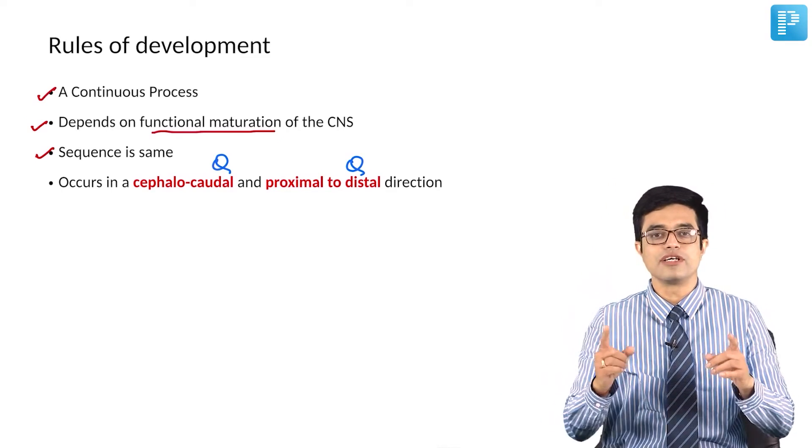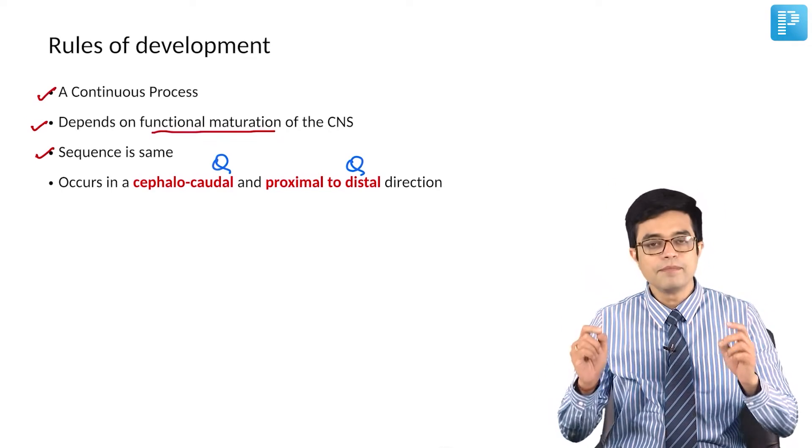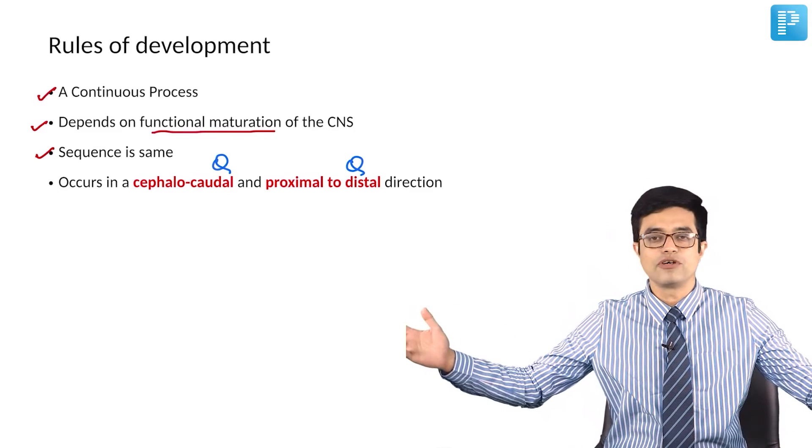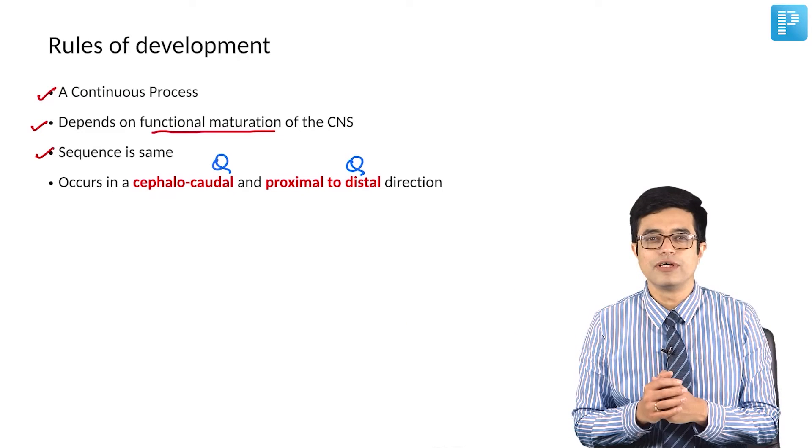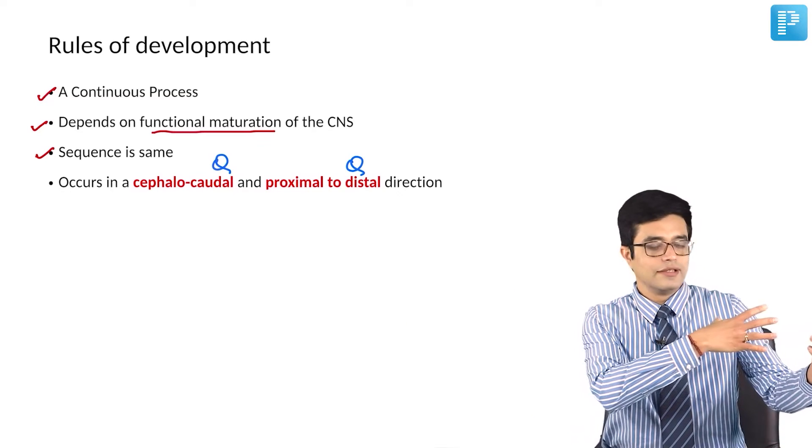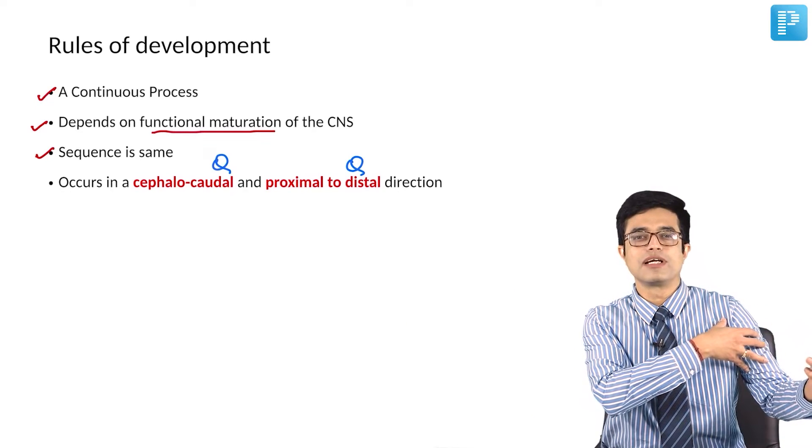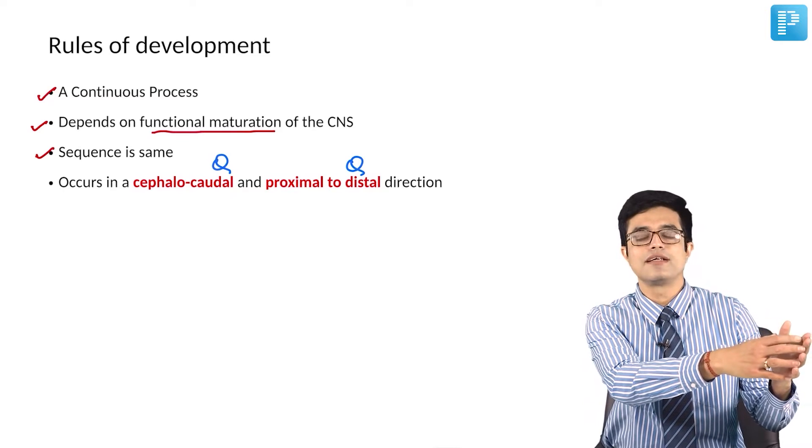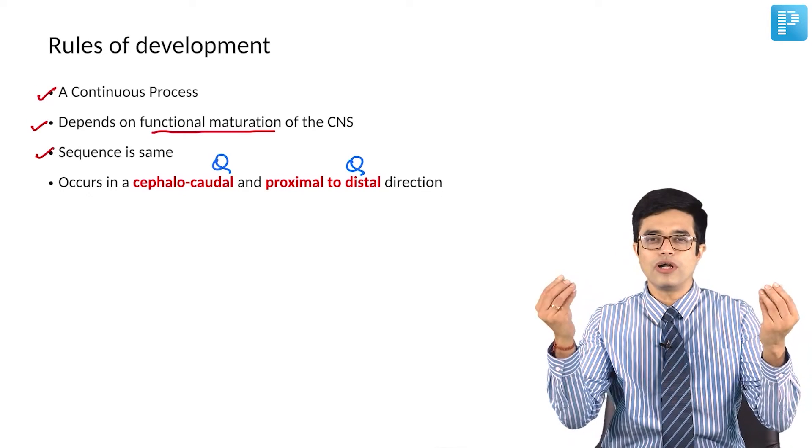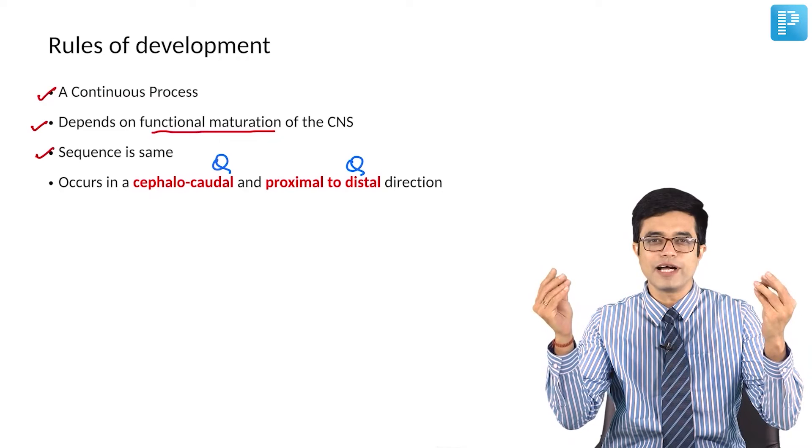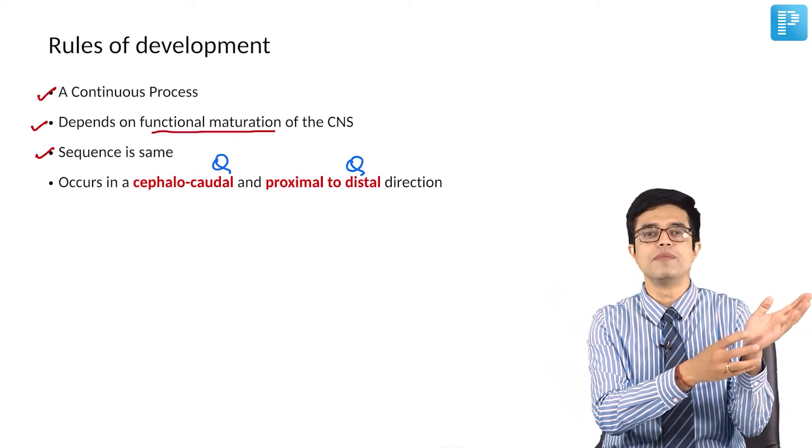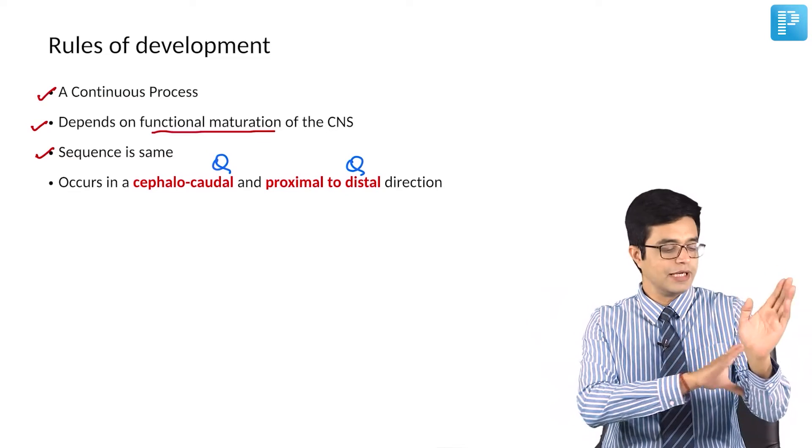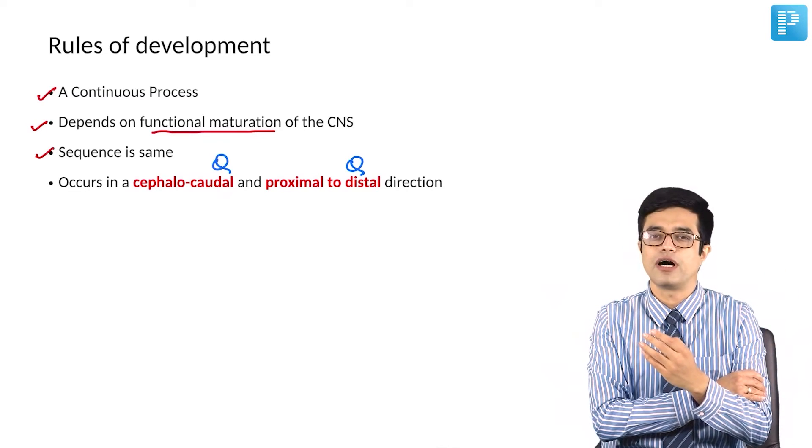So cephalocaudal progression is seen. Similarly, proximal to distal in case of limbs. Whenever a child has development of milestones, the proximal milestones will come early and the distal milestones will come last. All these fine motor milestones involving fine movements of hands will always come later as compared to gross movements involving your palm, involving your forearm and involving your arm.